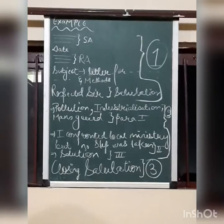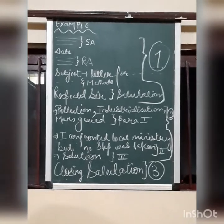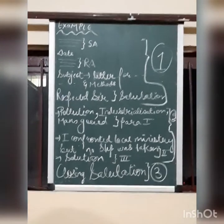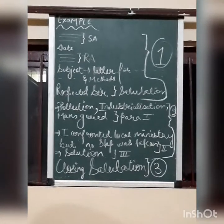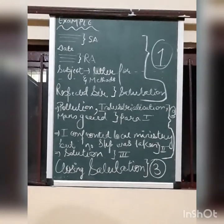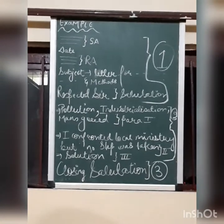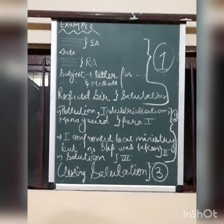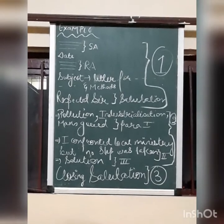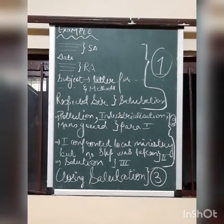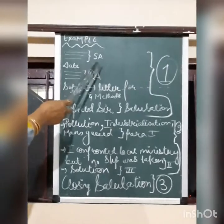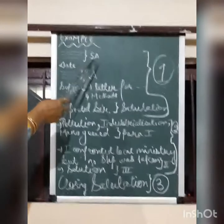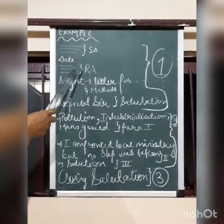To begin with, we are going to take an example. I have not written the question on the board; I will just read it out. You are Amit or Anushka — write a letter to the editor of The Indian Express, 6 MG Road, Delhi, about the growing degradation of the environment and suggest measures to protect the environment. The first step is the sender's address, then the date, then the receiver's address.